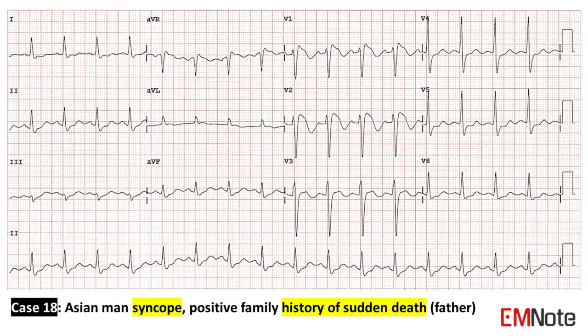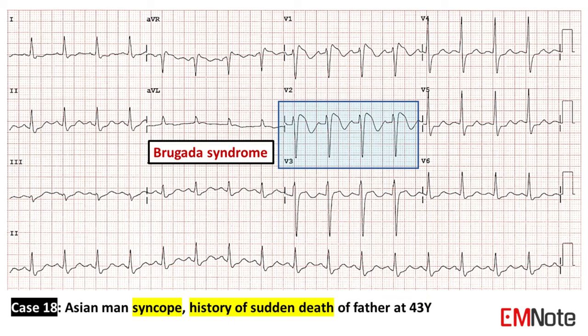Case 18: The patient is an Asian male presenting with syncope. He has a family history of sudden death of his father at age 43. The ECG shows a type 1 Brugada pattern. In combination with his syncope presentation and family history of sudden cardiac death, the patient can be diagnosed with Brugada syndrome.